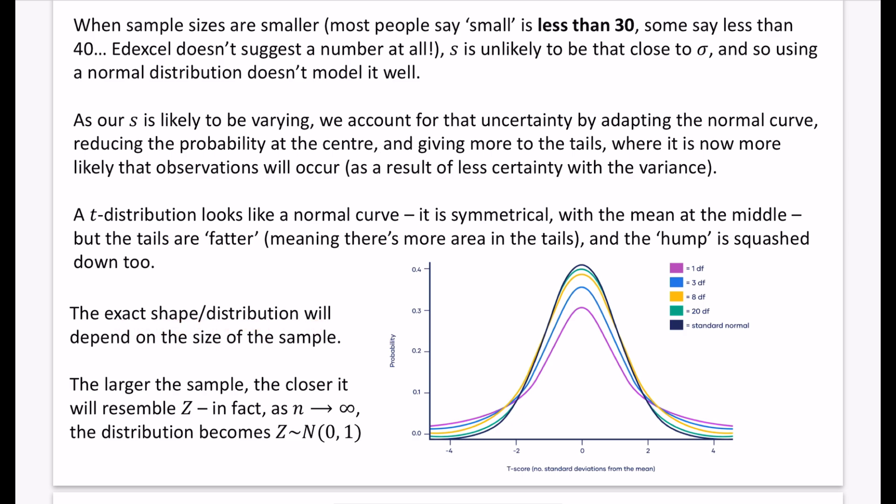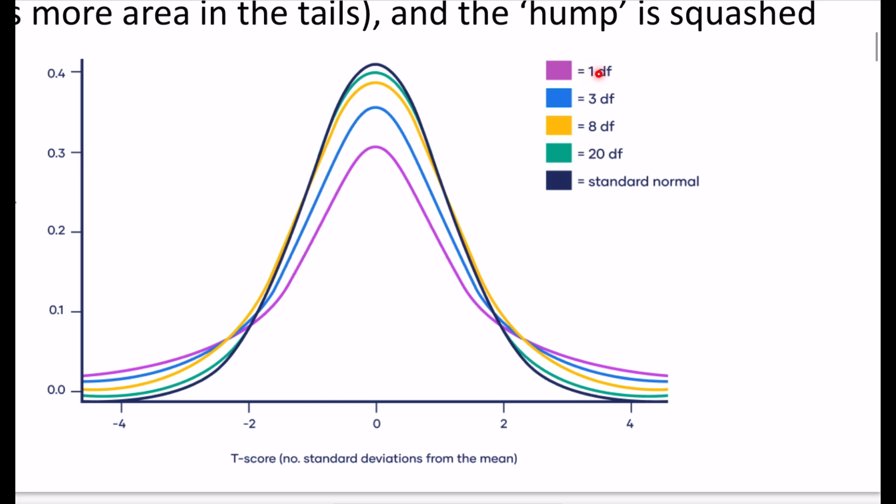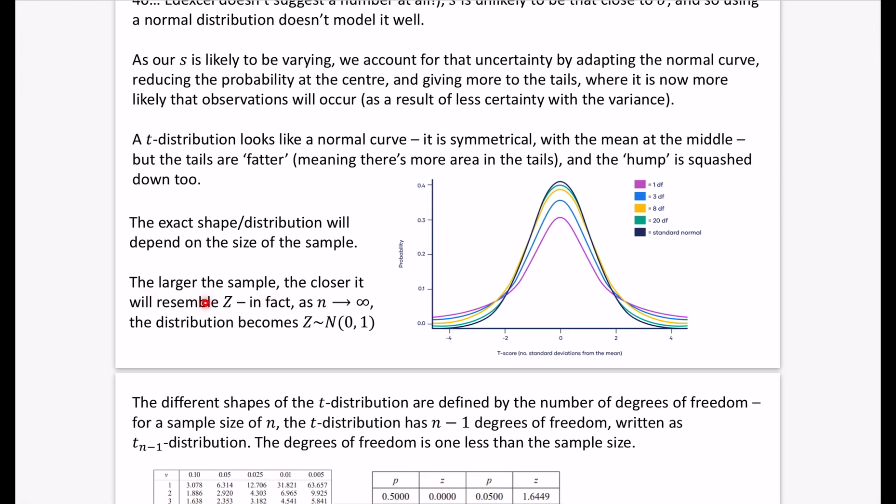The exact shape of the distribution will depend on the size of the sample. You can see that when we have just two things in the sample, this is corresponding to four, nine, and 21 things. We're already getting an idea of how the sample size will relate to the degrees of freedom. As you increase the number of things in the sample, it's going to start looking more and more similar to the normal curve. The green one is almost looking the same as the normal curve, whereas the blue one is quite different to it. The larger the sample, the closer it will resemble z. In fact, as n goes towards infinity, the t distribution literally becomes the standardized normal distribution, which we call z.